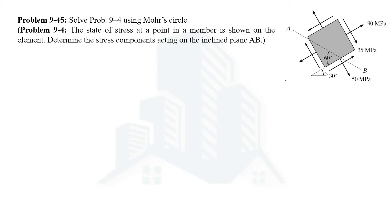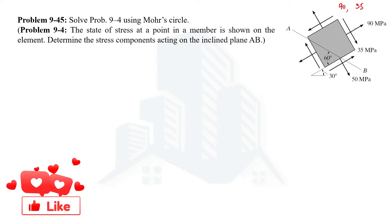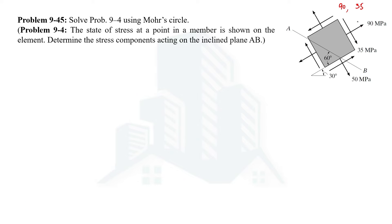To solve this problem we need to know the stress conditions at different planes. At this plane we have a normal stress of 90 MPa and shear stress of 35 MPa. 90 is tensile, which we count as positive, and we count clockwise shear stress as positive. At the other plane we have tensile stress of 50 MPa, hence positive, but anticlockwise shear stress of 35 MPa, hence negative.